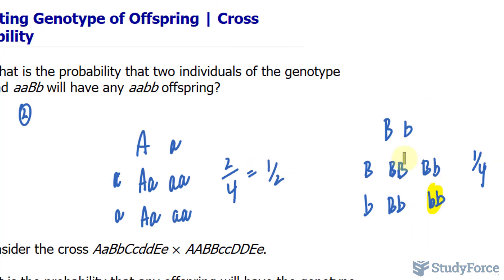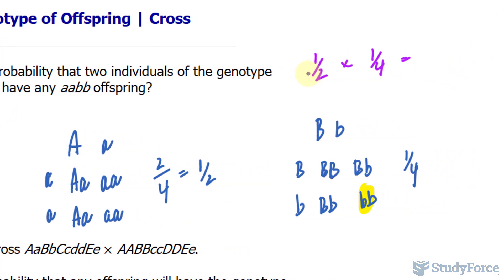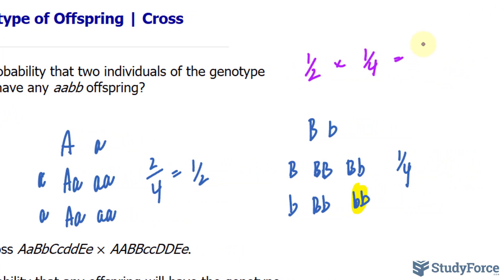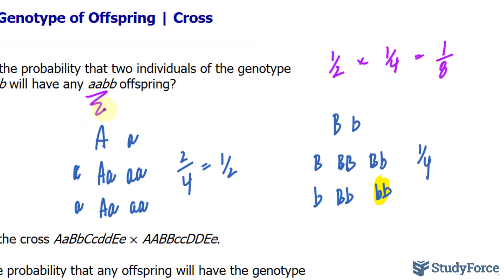So we take these two probabilities — one half and one quarter — and multiply them together. Multiplying these two fractions gives you one in eight. So there's a one in eight chance that the offspring will have this particular genotype.